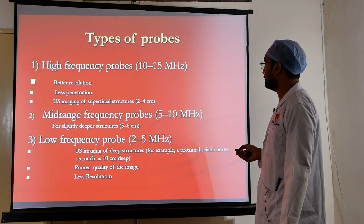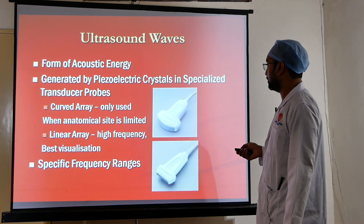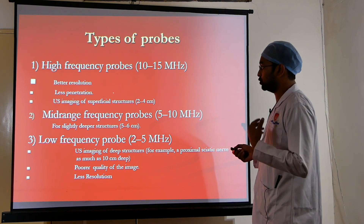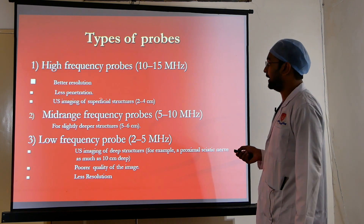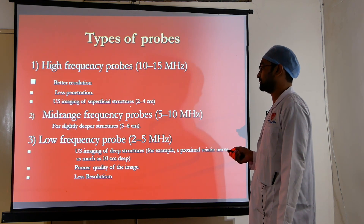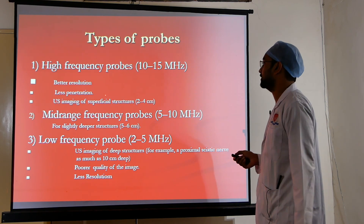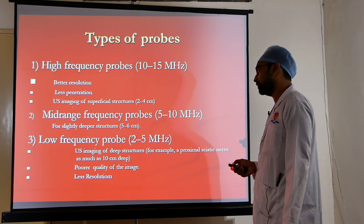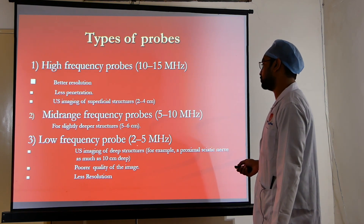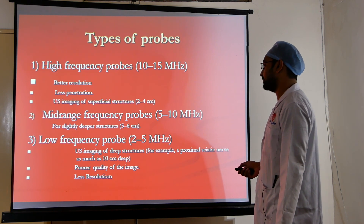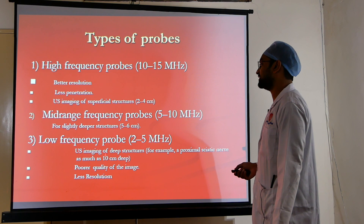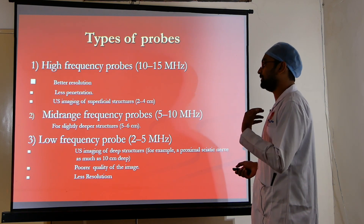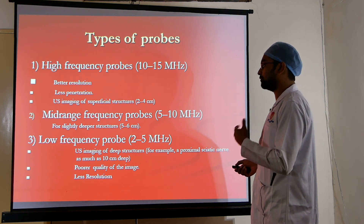High frequency probes give better image resolution but less penetration, used for superficial structures limited to 2 to 4 centimeters from the skin surface. Mid-range frequency probes at 5 to 10 megahertz are for slightly deeper structures up to 5 to 6 centimeters. Low frequency probes at 2 to 5 megahertz are used for imaging deep structures, for example a proximal sciatic nerve as deep as 10 centimeters, but produce poorer image quality with less resolution.